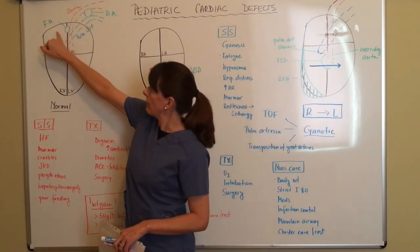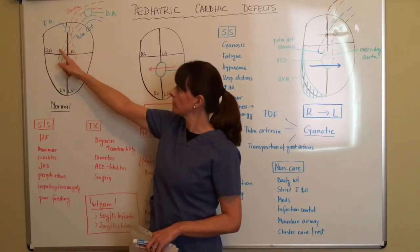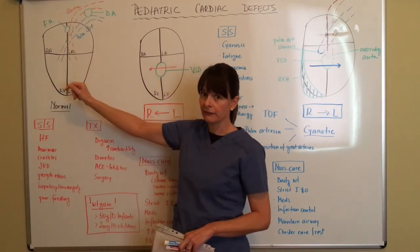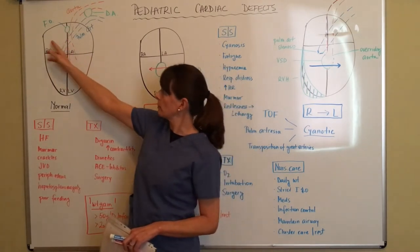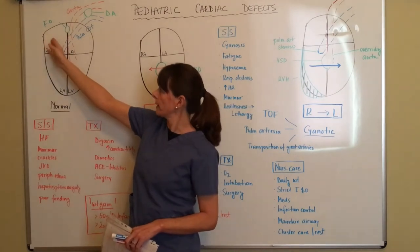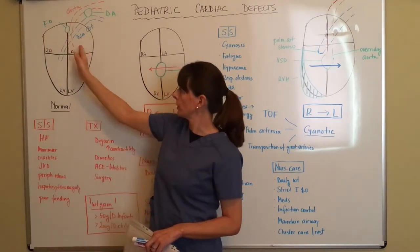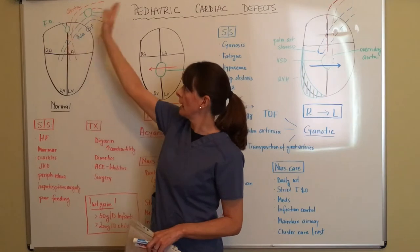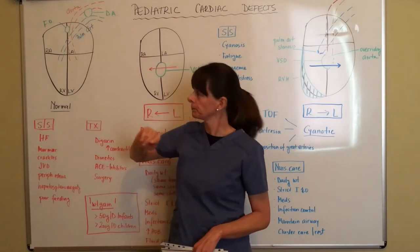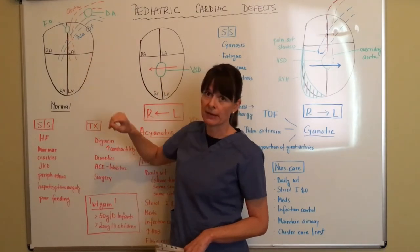So there are these two structures. One of them is the foramen ovale, which is an opening between the right atrium and the left atrium that allows the blood to flow from the right atrium over to the left atrium, then to the left ventricle and out to the body, bypassing the lungs.